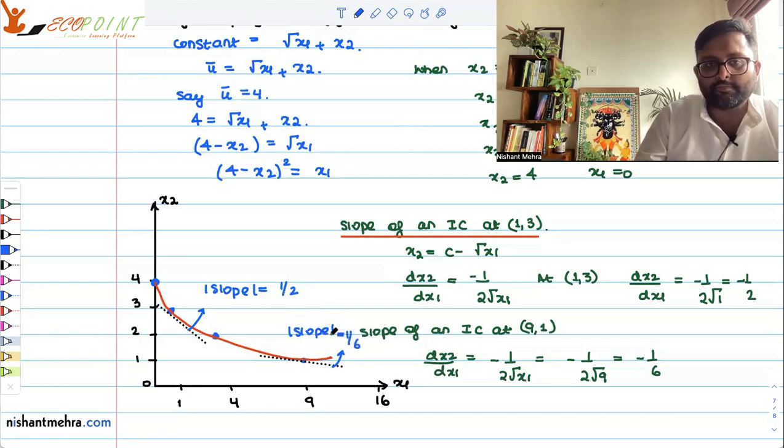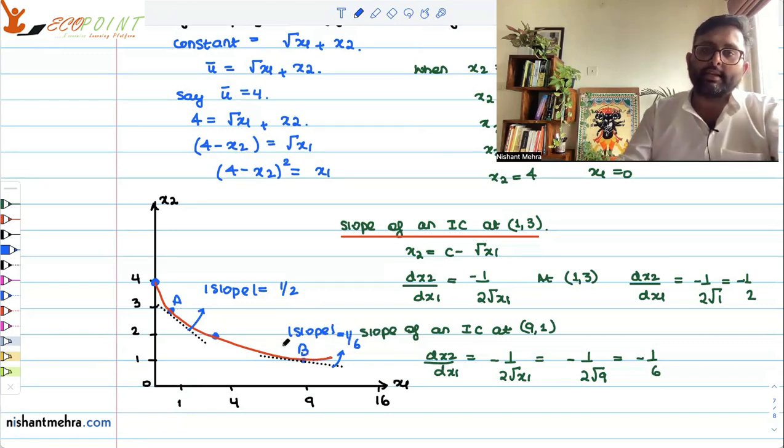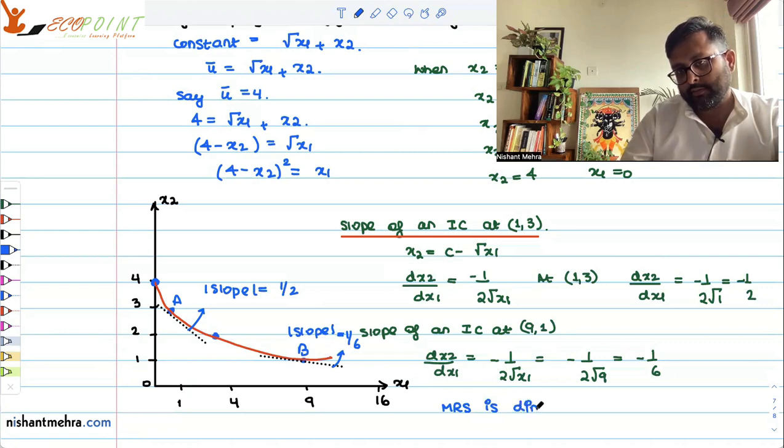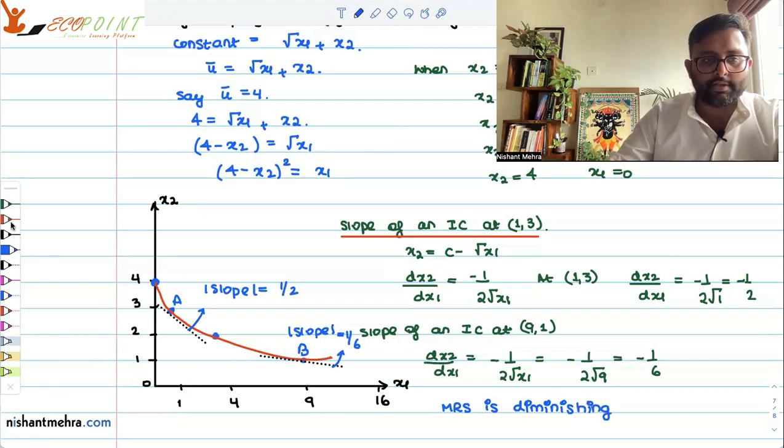In absolute value, the slope here was 1 by 2. Here, the slope is 1 by 6. So the modulus of slope is 1 by 2 at the first point. Here, modulus of slope is 1 by 6. So this value is decreasing when you are moving down and to the right. When you move from point A to point B, this slope is falling. And hence, you can easily say that the MRS is diminishing.